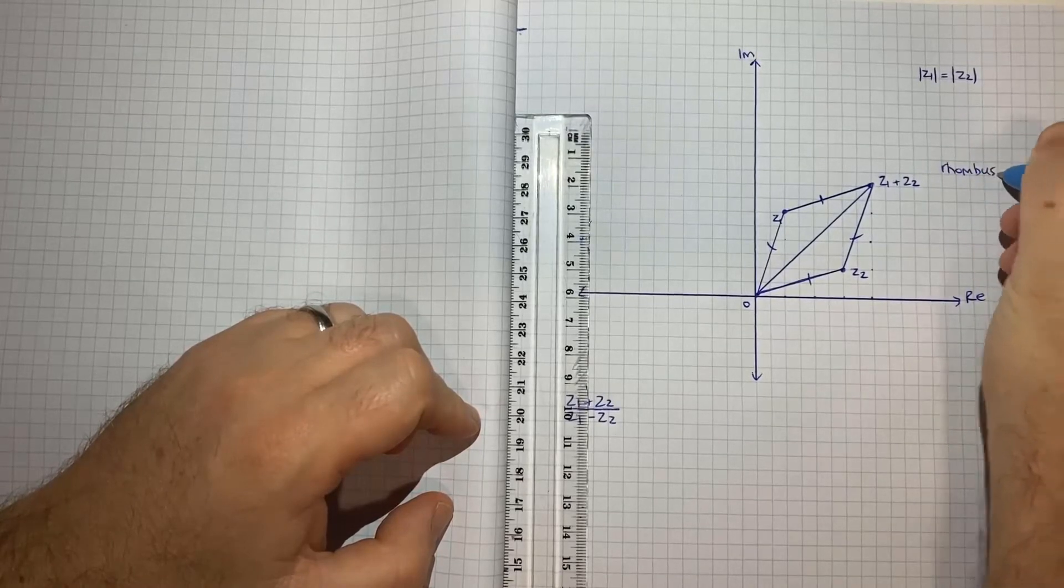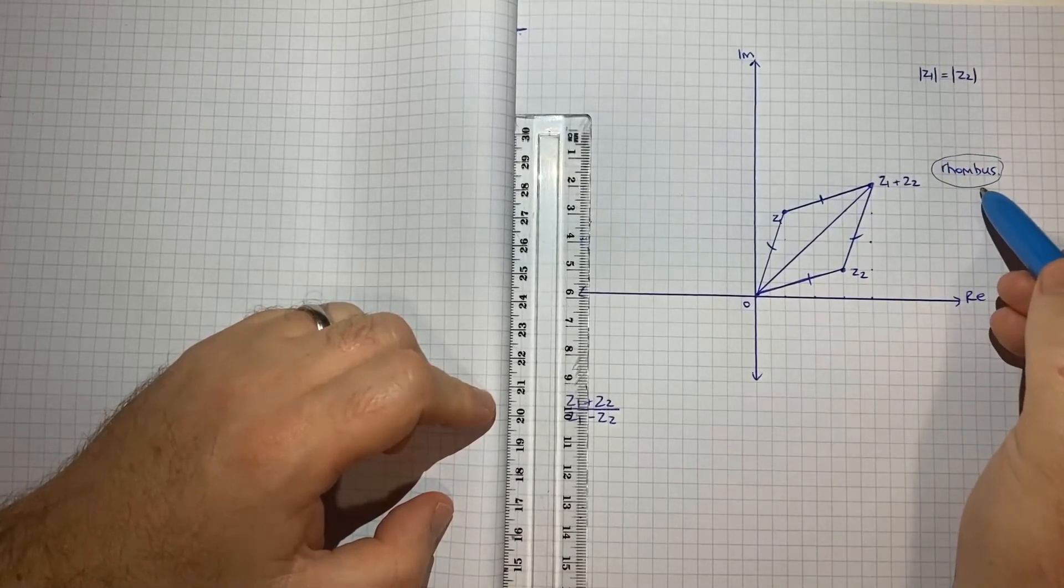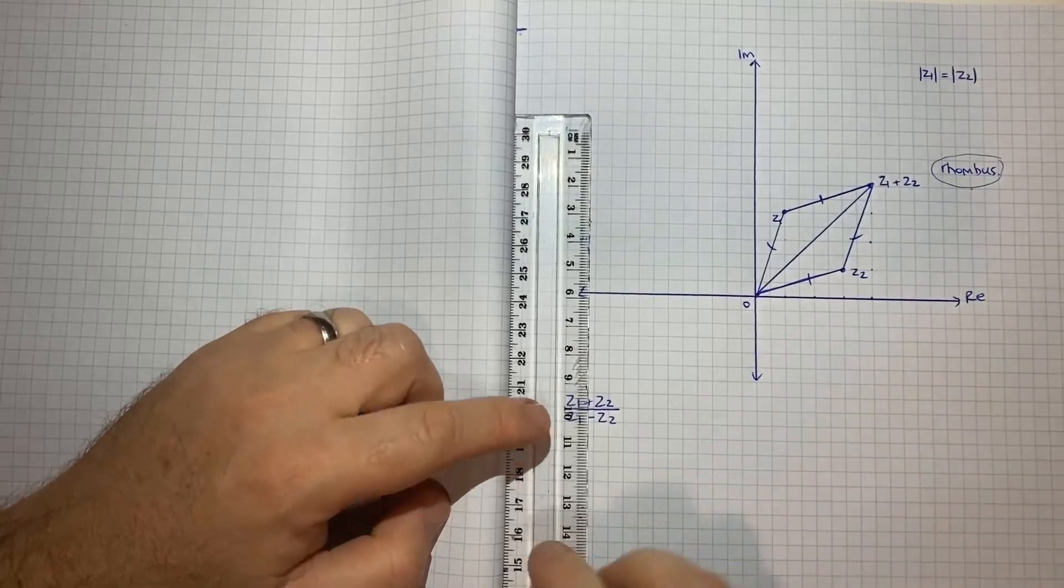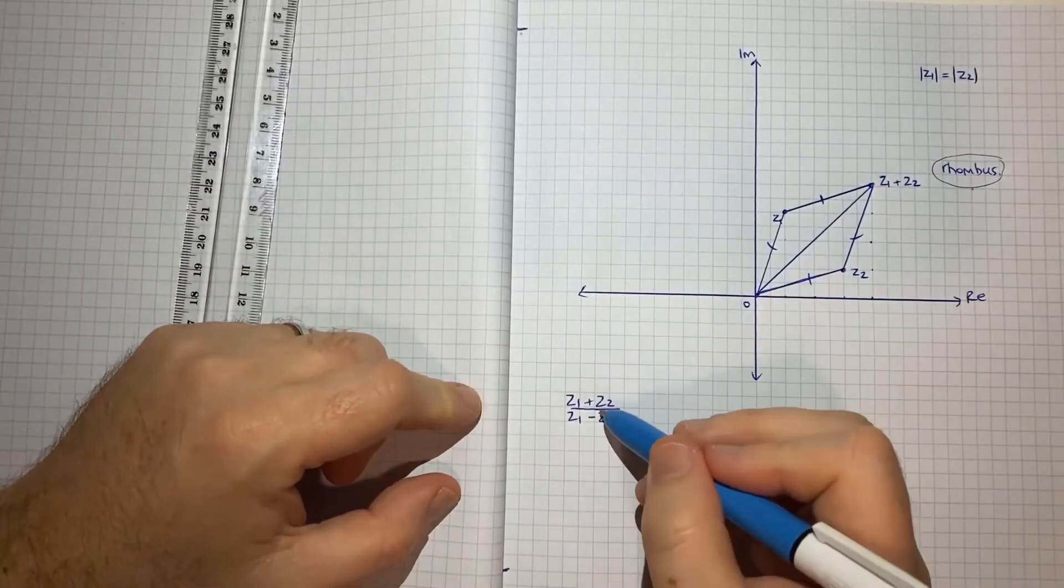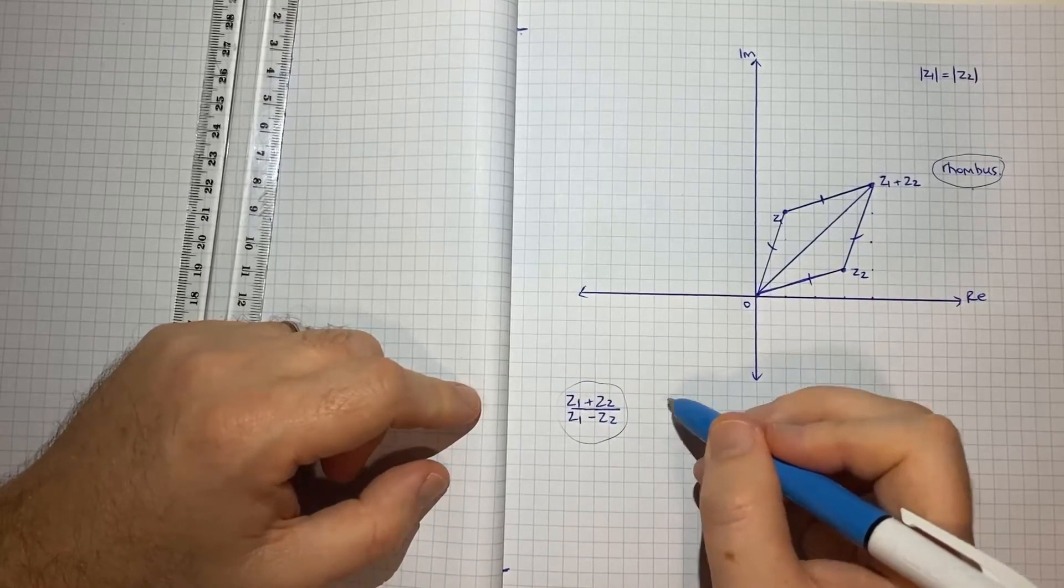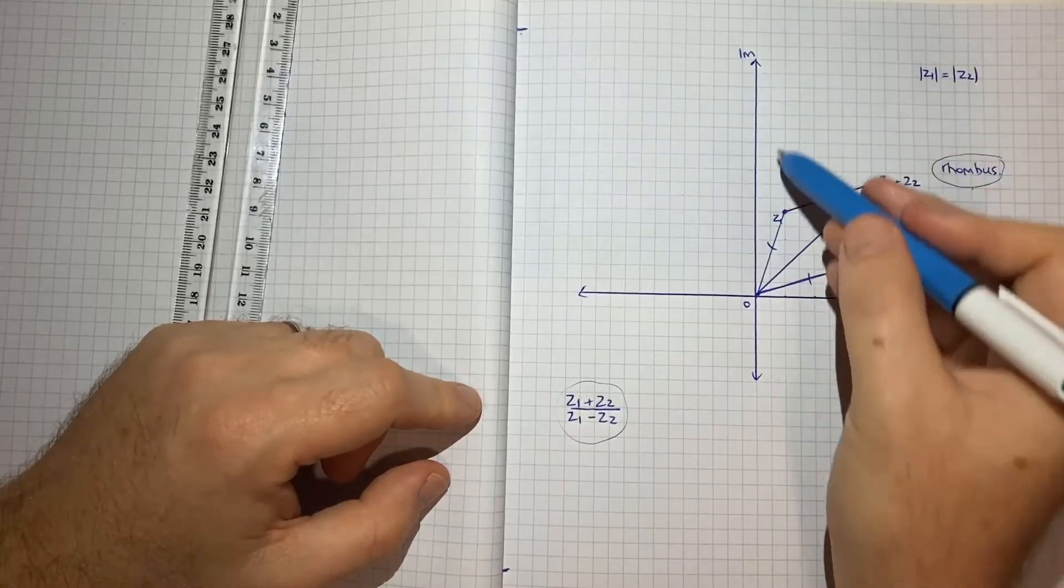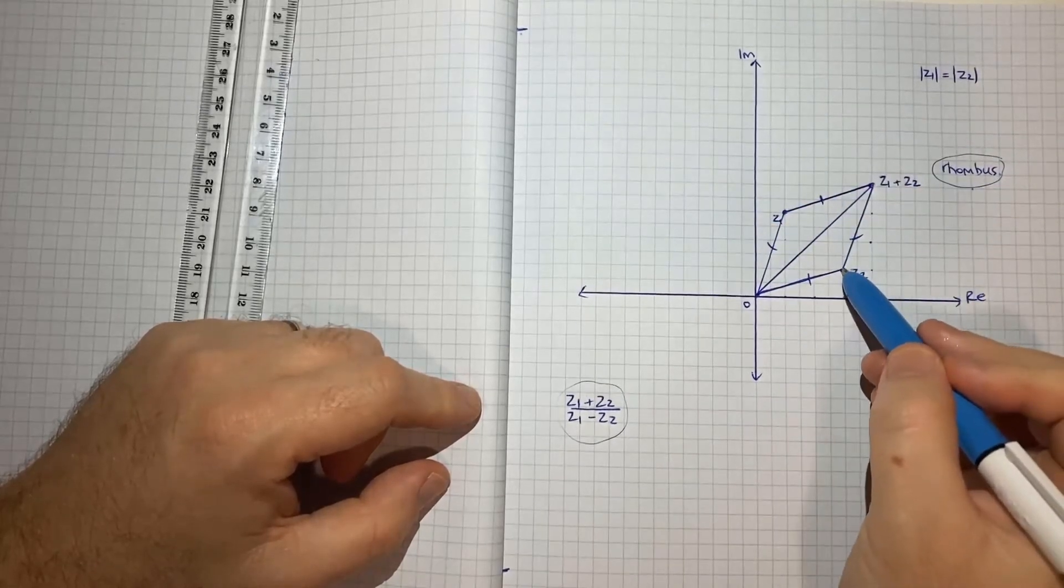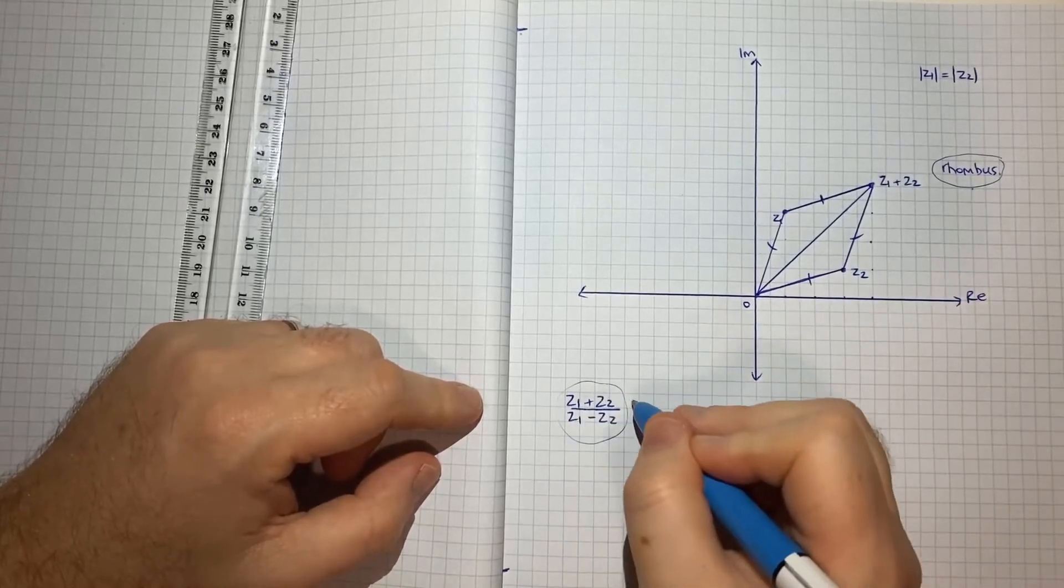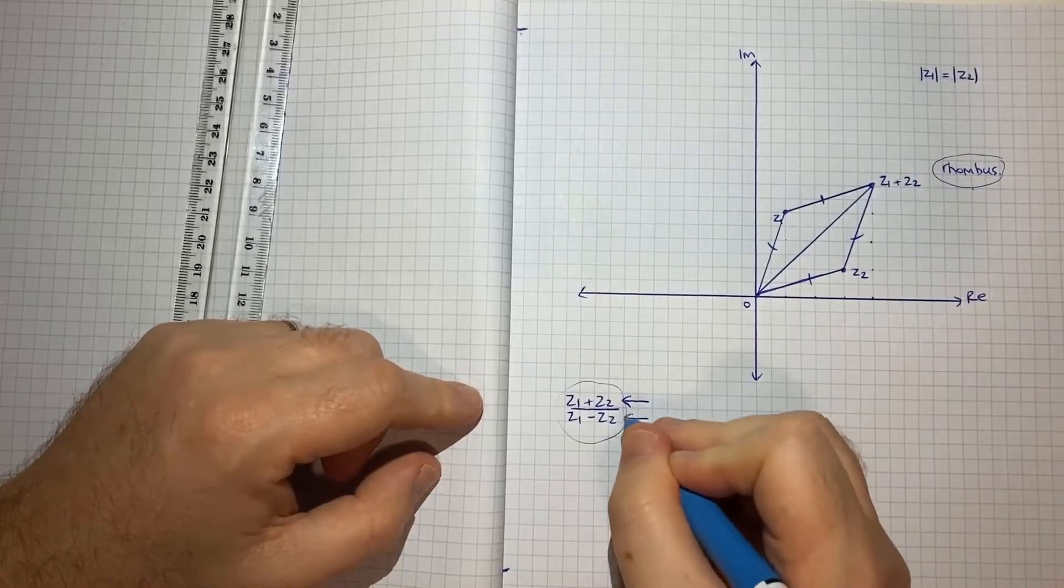And that's going to be useful because one thing in particular we know about a rhombus is that its diagonals intersect at 90 degrees. And if you remember, I mentioned earlier that if we can show that the argument of this is either equal to plus or minus 90 degrees, then we're going to be on this imaginary axis. So we're kind of getting close here. The next thing that will be helpful, so we've looked at z1 plus z2, now let's look at z1 minus z2.